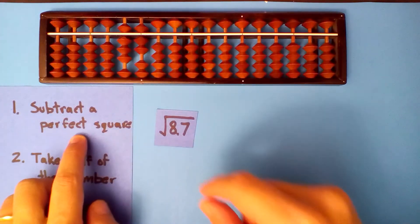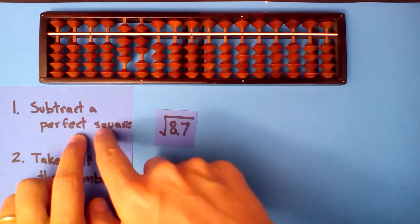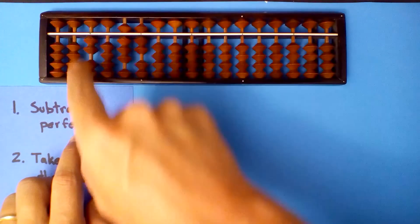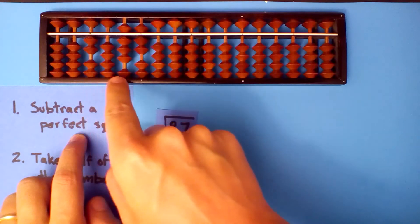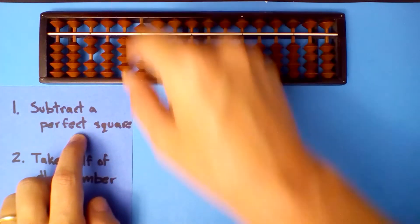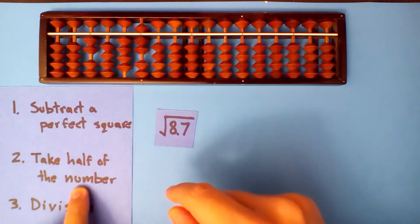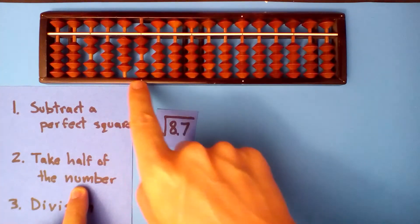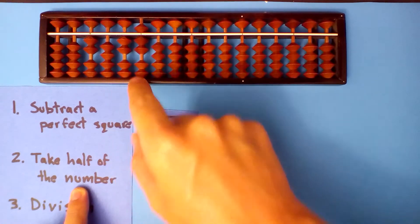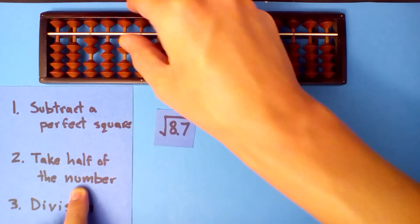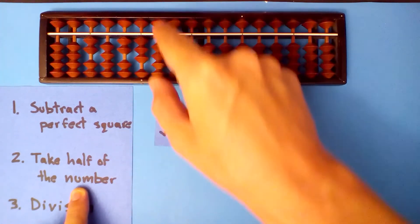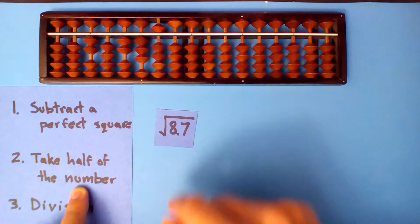Subtract a perfect square — 2. 2 squared is 4, subtract 4. Take half of what's left: half of 4 is 2, half of 7 is 3, half of 10 is 5.